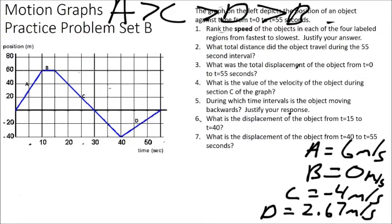Question four asks for the velocity of the object during section C. From a position-time graph, average velocity equals the slope. In question one we already found the slope of section C is negative 4. Velocity is a vector, so the negative matters — the object is moving to the left or downward. Our answer is negative 4 meters per second. Question five: during which time intervals is the object moving backward? The only time this object has a negative slope or negative velocity is section C, so our answer is during section C.